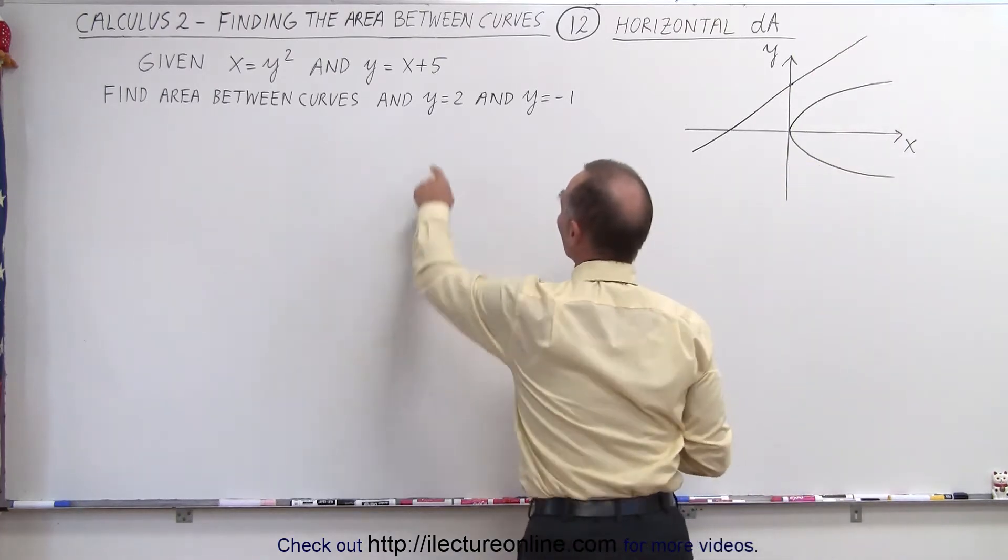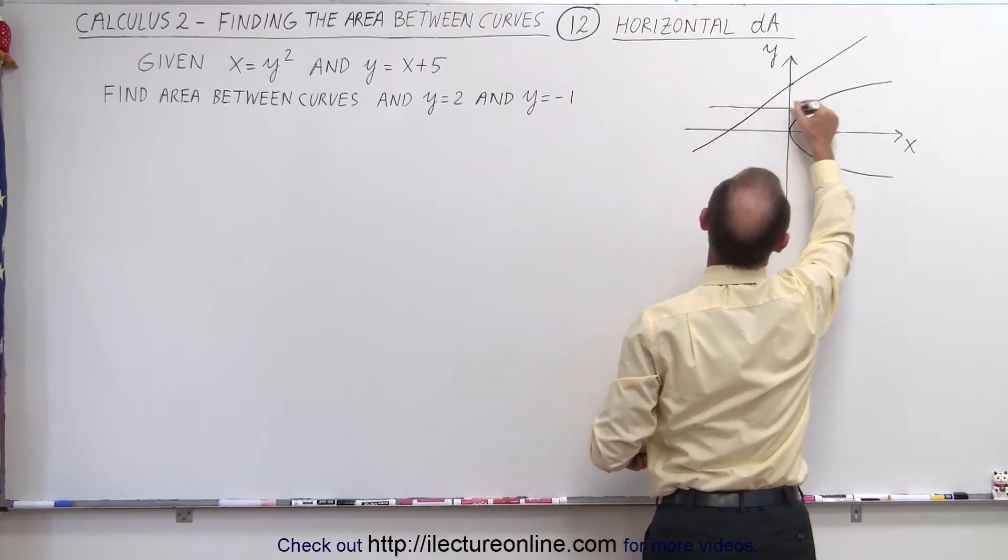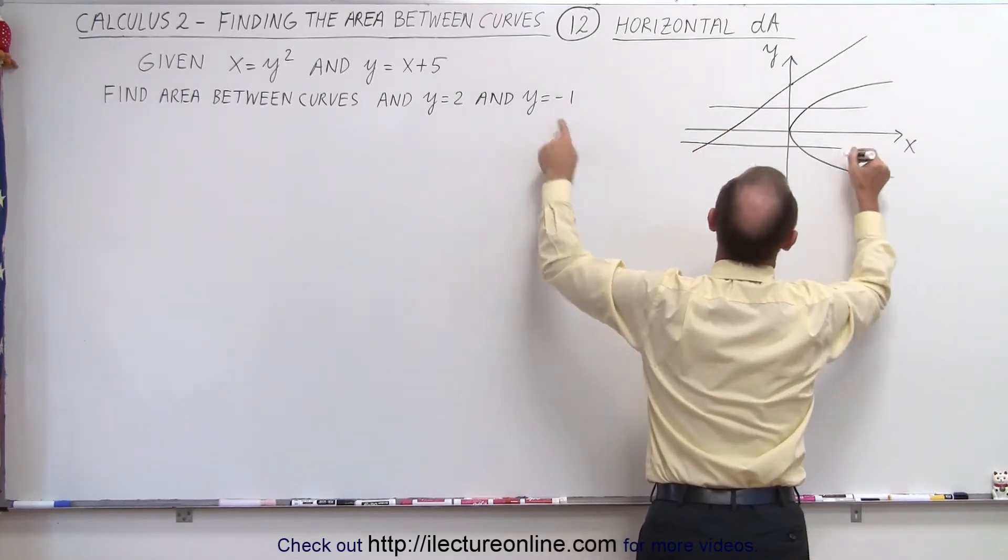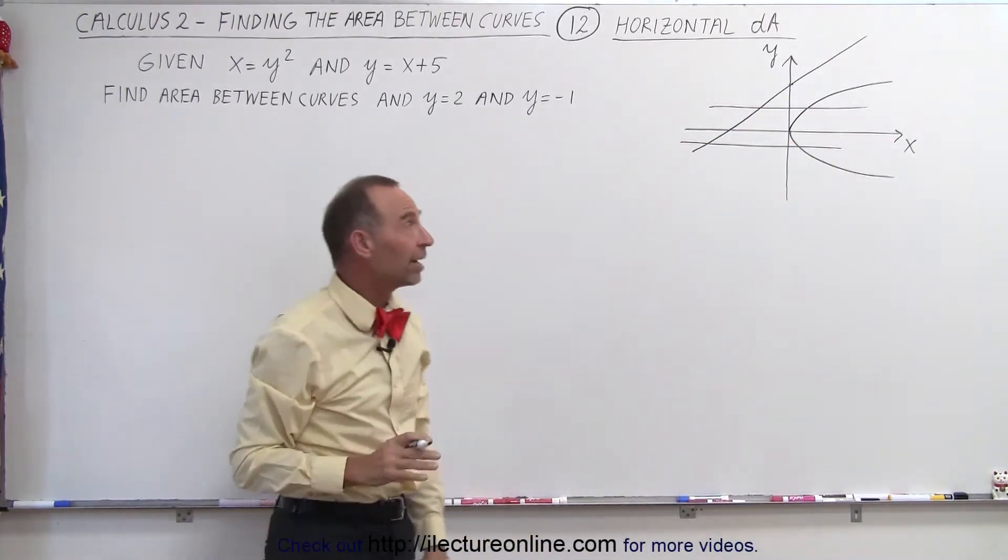And then we need to draw these two lines: y equals 2, that'll probably be this line right here, and y equals negative 1, which is this line right here. You can see that this here is the area that we're trying to find.